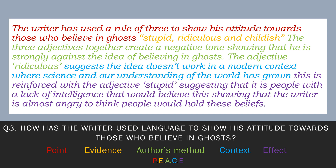So the writer has used a rule of three to show his attitude towards those who believe in ghosts — stupid, ridiculous, and childish. The three adjectives together create a negative tone, showing that he is strongly against the idea of believing in ghosts. The adjective ridiculous suggests the idea doesn't work in a modern context where science and understanding of the world has grown. This is reinforced with the adjective stupid, suggesting that it is people with a lack of intelligence that would believe this, showing that the writer is almost angry to think people would hold these beliefs.